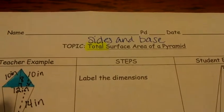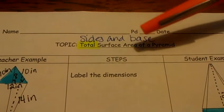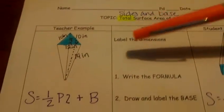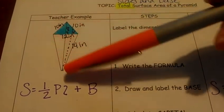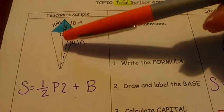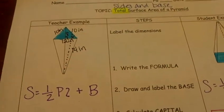There's lateral. On to total. Total is your sides and your one base. Here we go. This right here, I know it looks a little funny, but it's still a pyramid. It's just upside down. So write the formula.